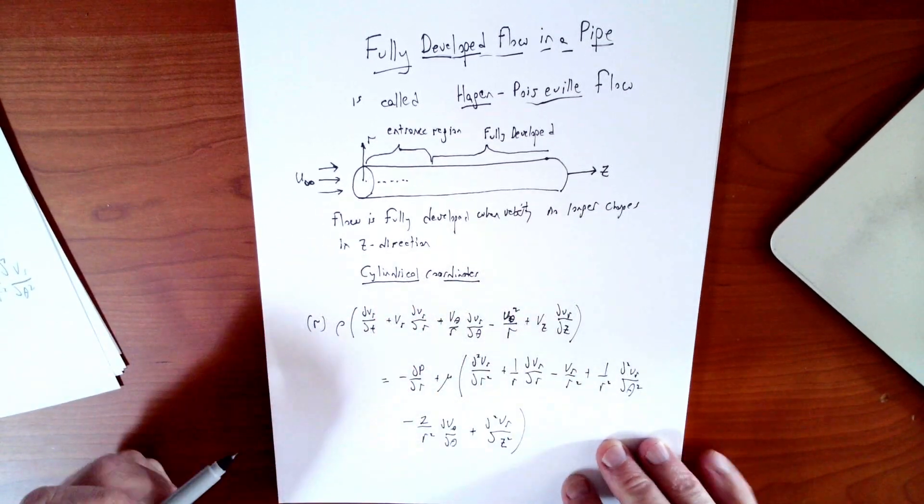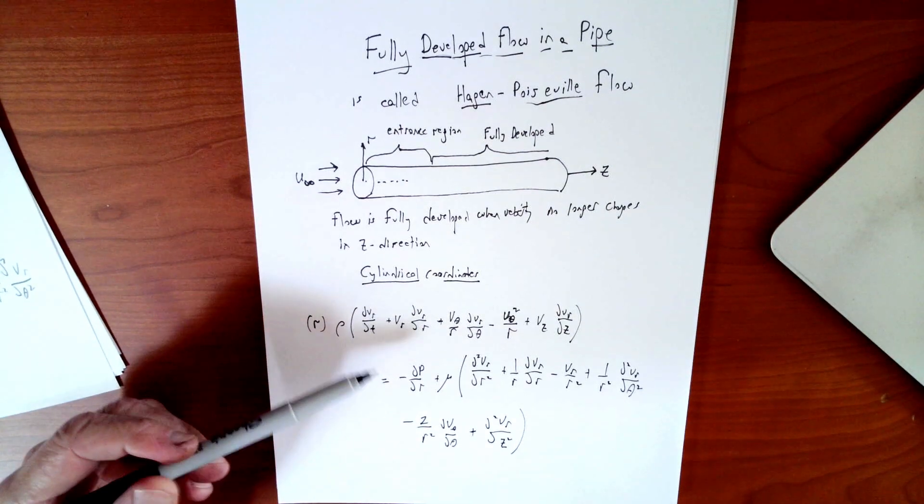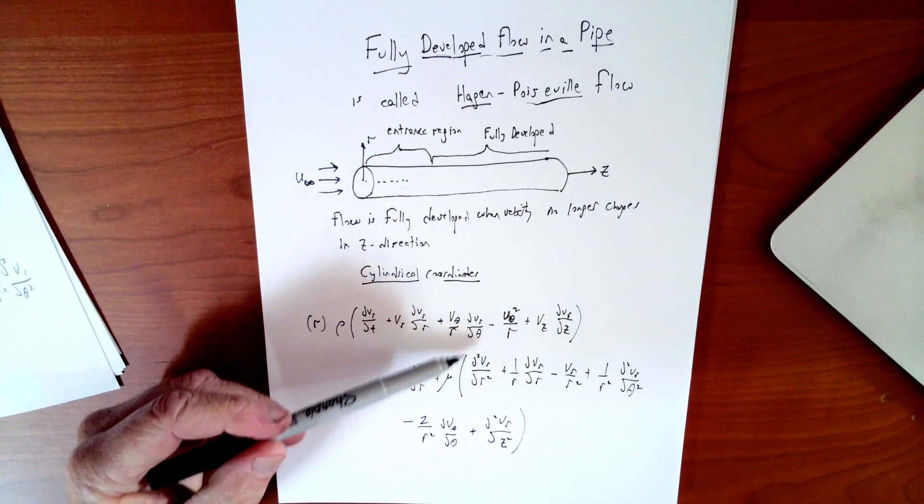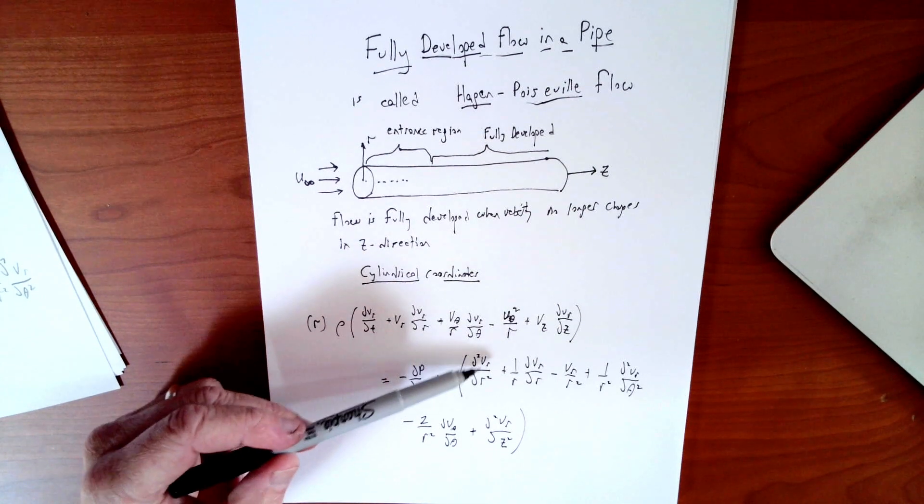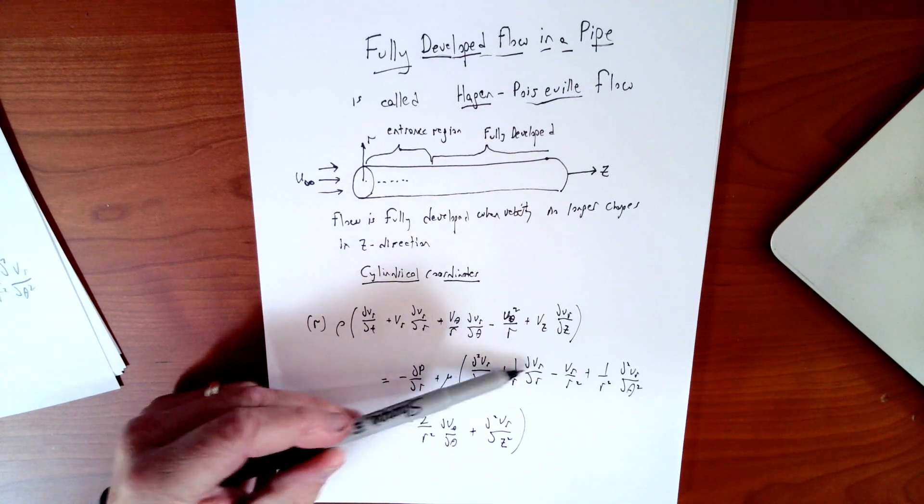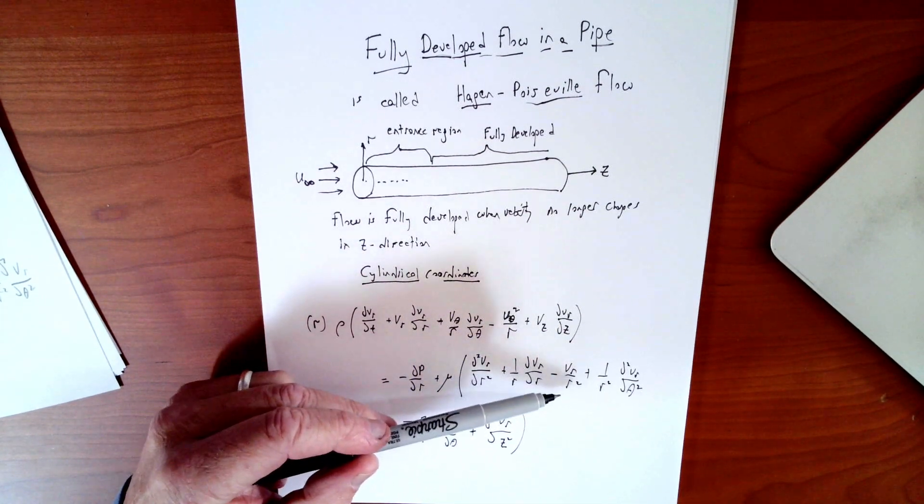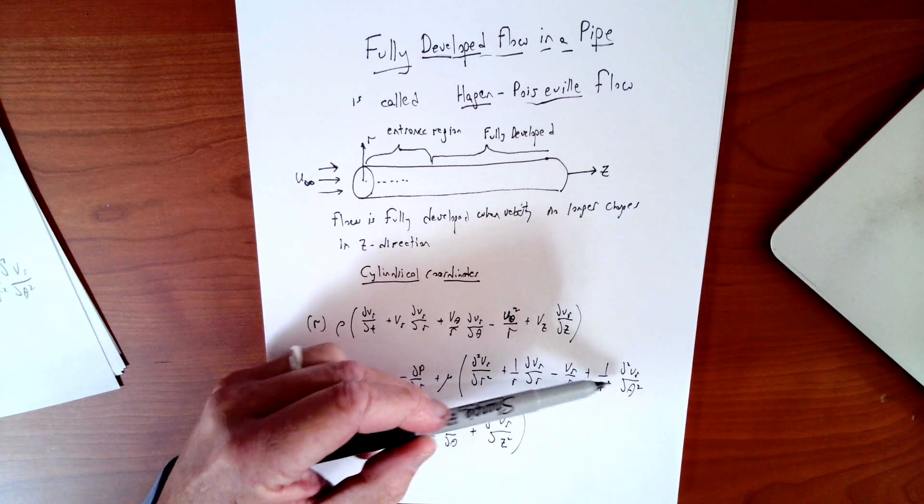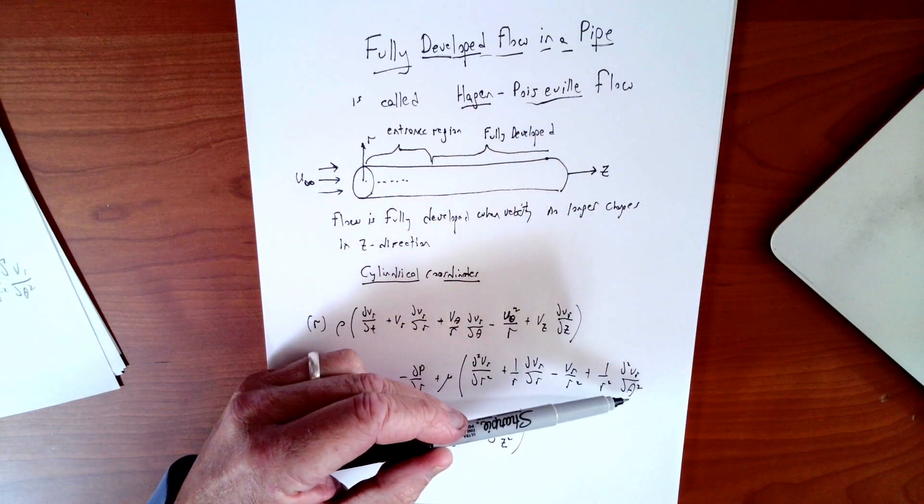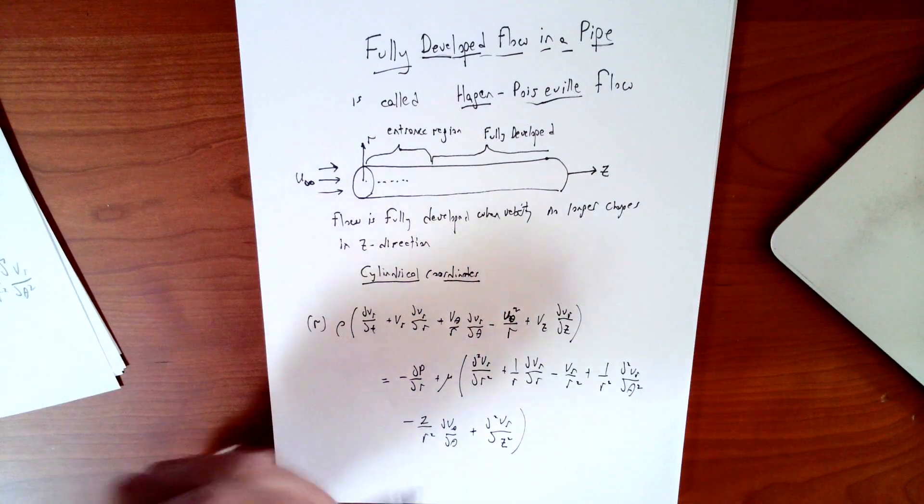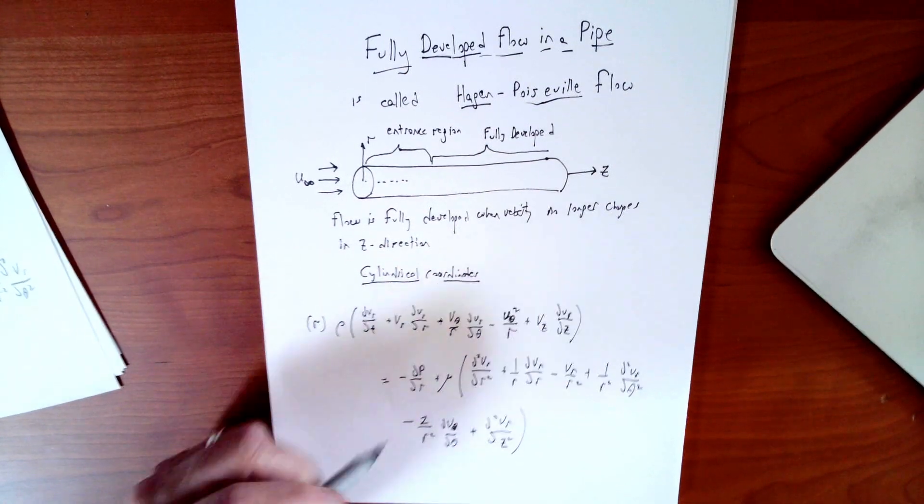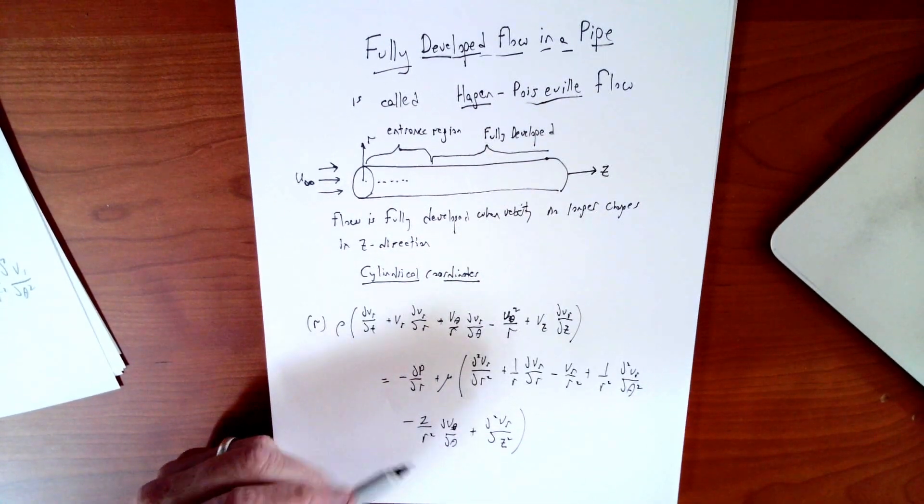So the right-hand side of that equation, minus dp/dr, mu viscosity times all these other terms: d squared vr/dr squared, plus 1 over r dvr/dr, minus vr over r squared, plus 1 over r squared d squared vr/d theta squared, minus 2 over r squared dv theta/d theta, and then plus d squared vr/dz squared.